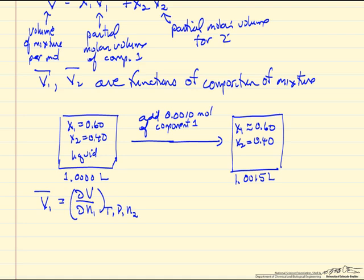So we can envision if we had a system where the mole fraction of component one was 0.6 and component two was 0.4. So it's liquid phase, and its total volume is one liter. We add a very small amount of component one, and we observe that the volume increases by a small amount. The mole fractions change slightly, so I've indicated they're approximately equal to these values, but obviously they're slightly different.